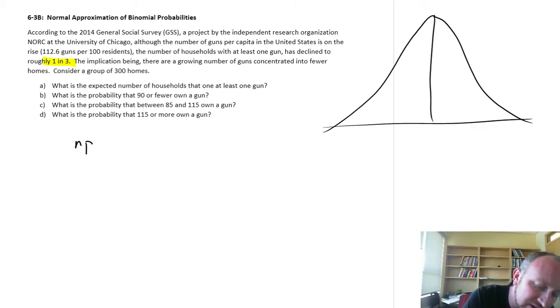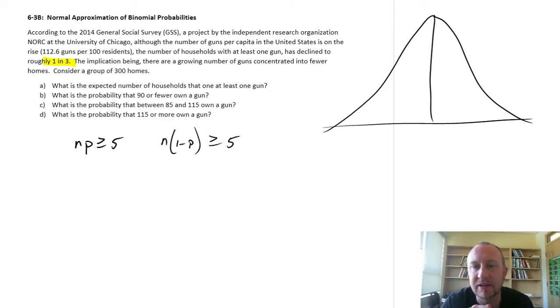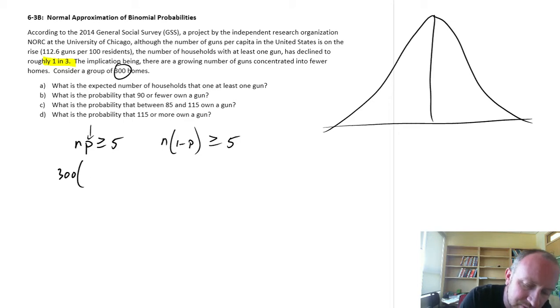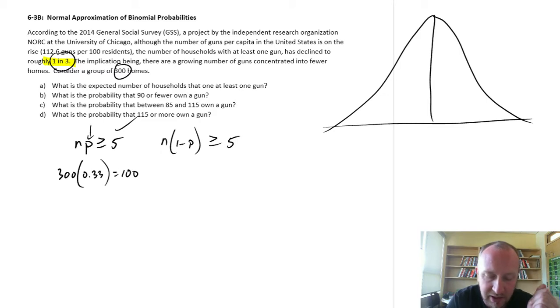As long as it satisfies these two conditions, that the sample size times the probability, and the sample size times one minus the probability are greater than five, then we're okay to approximate these binomial probabilities with the normal distribution. So if my sample size is 300 and my probability one in three, so let's just call that 0.33. So this is going to be equal to 100. So that checks out, and we're okay there.